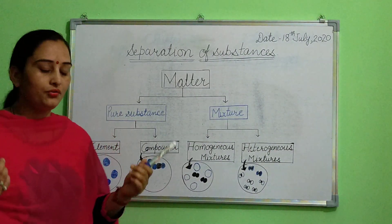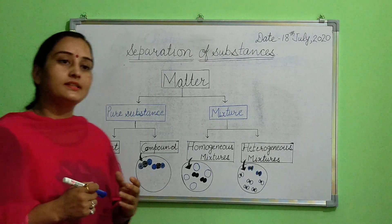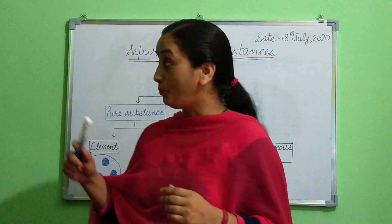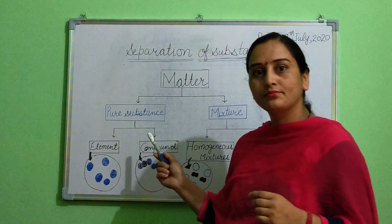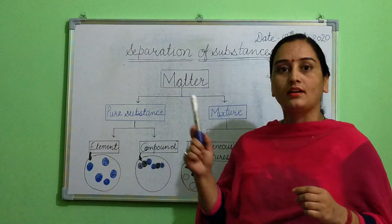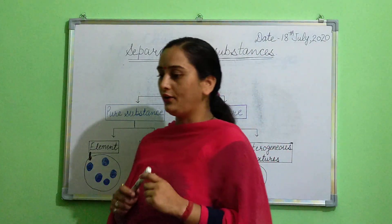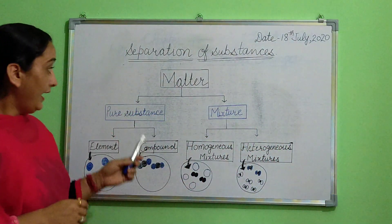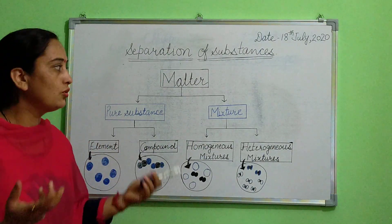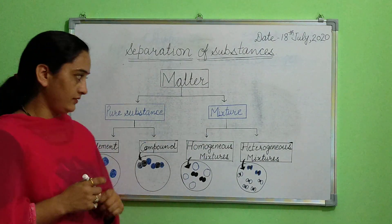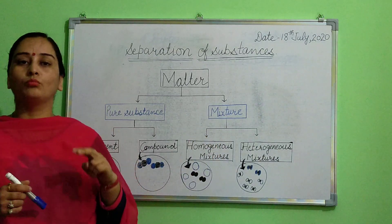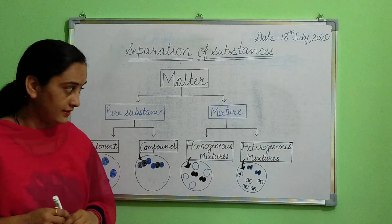There are some substances that are made up of only one kind of particles — these are called pure substances. What are pure substances? These substances are made up of only one kind of particles. And mixtures contain more than two kinds of particles; mixtures are substances made up of more than two kinds of particles.